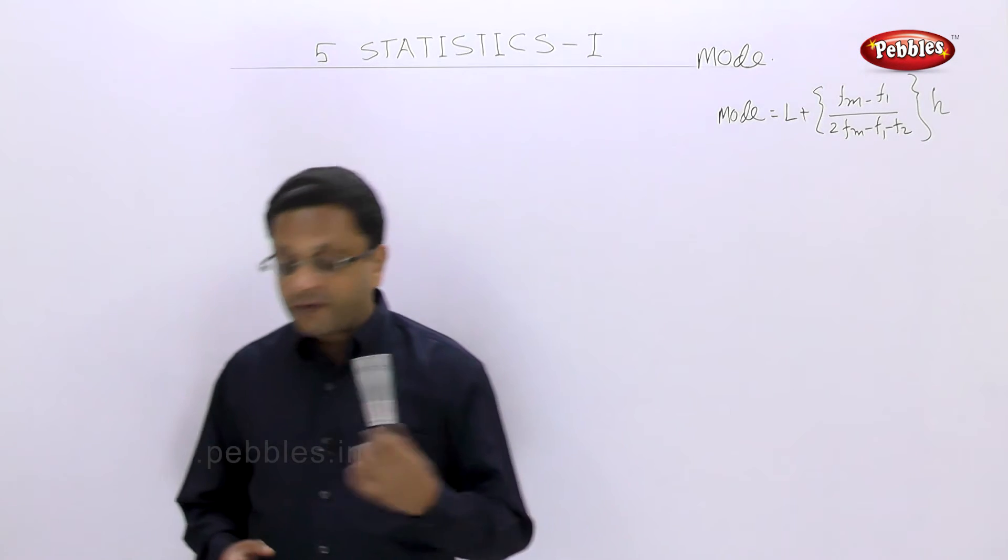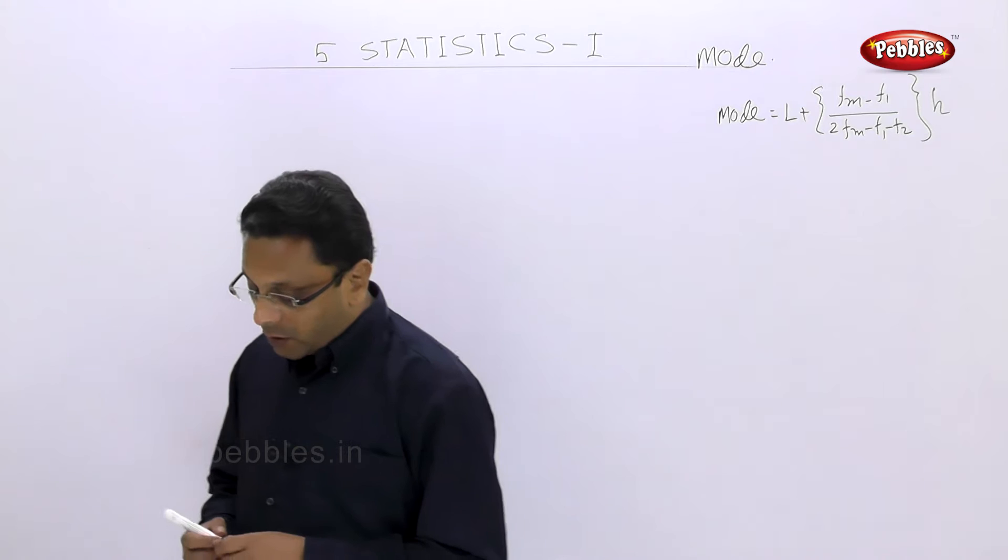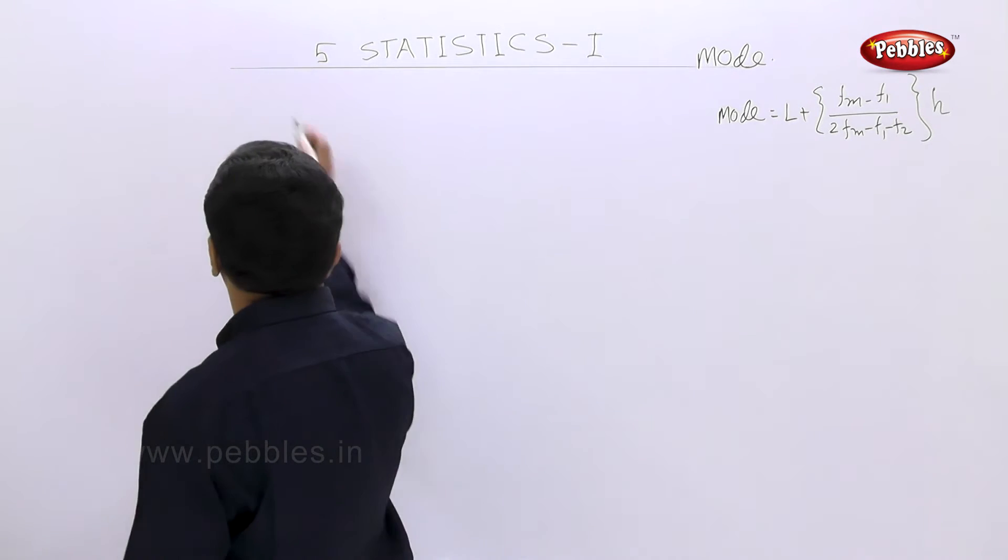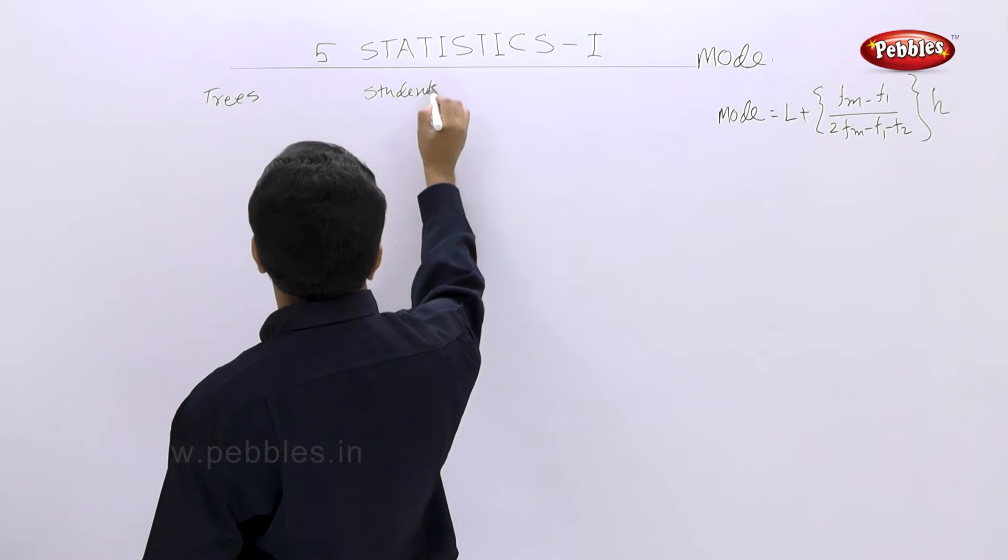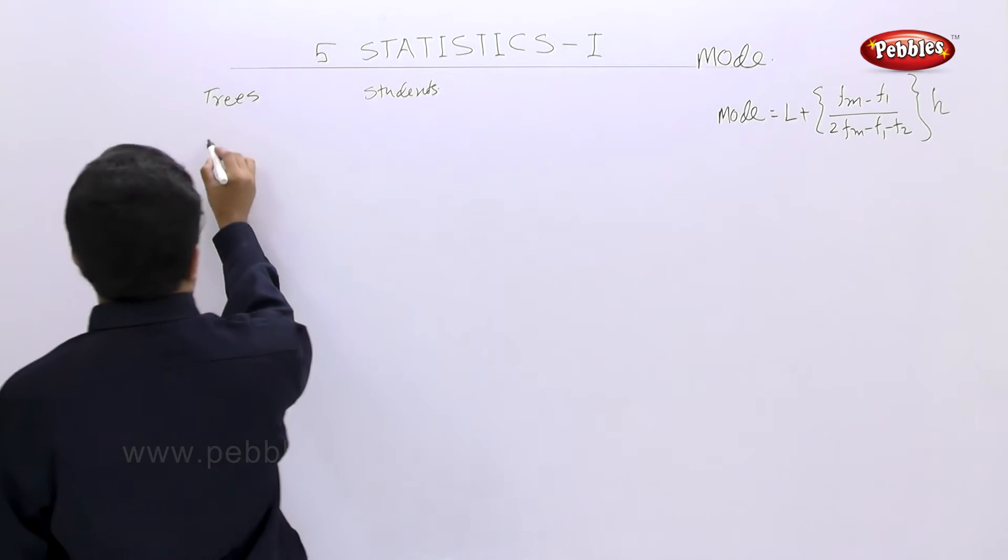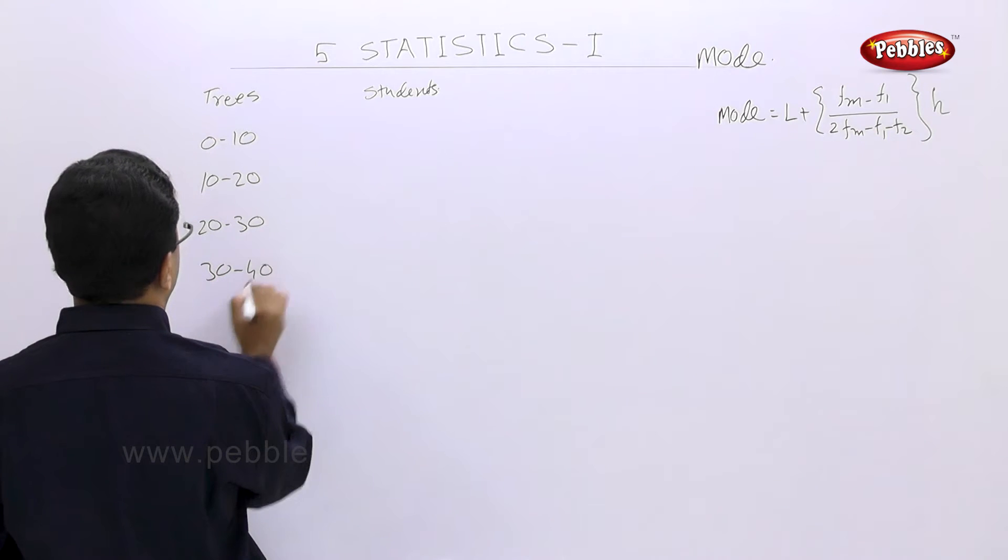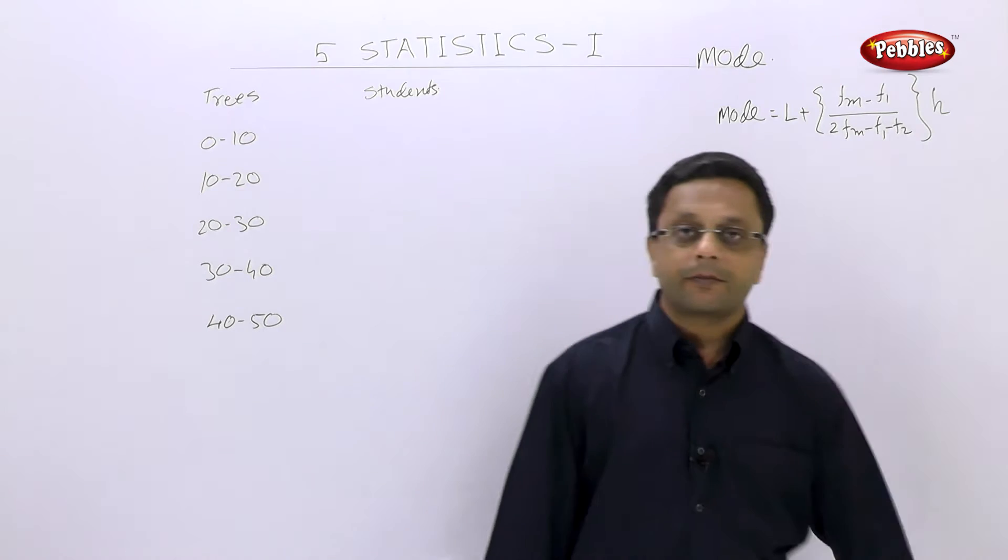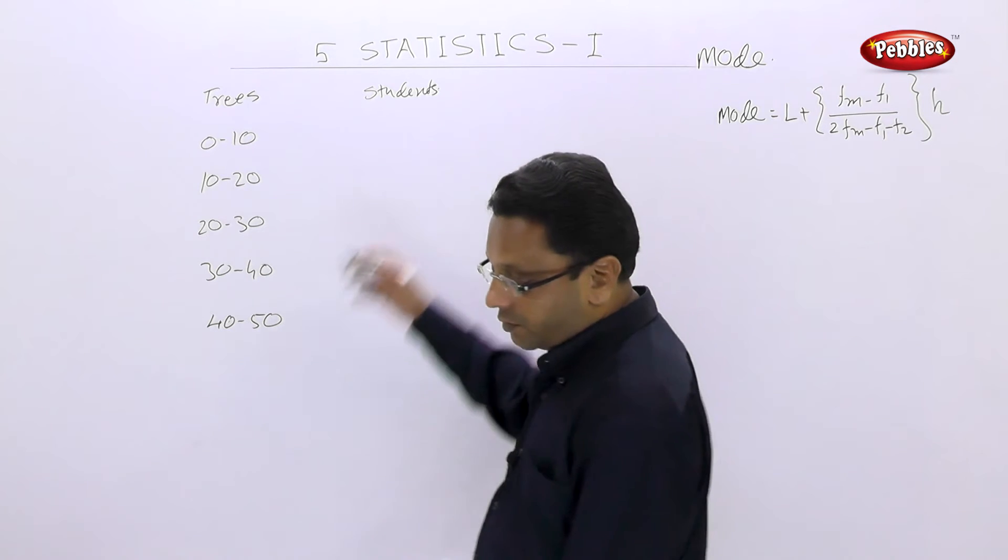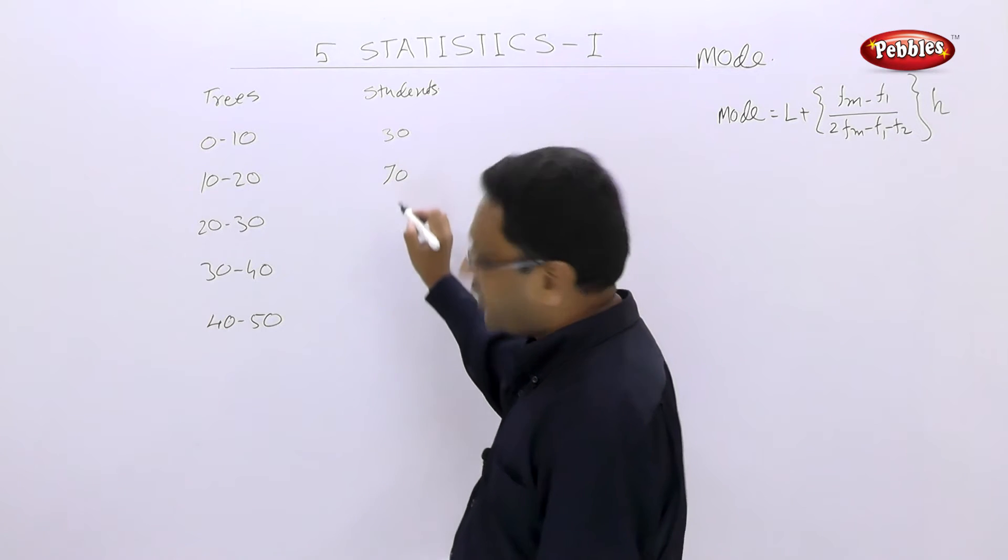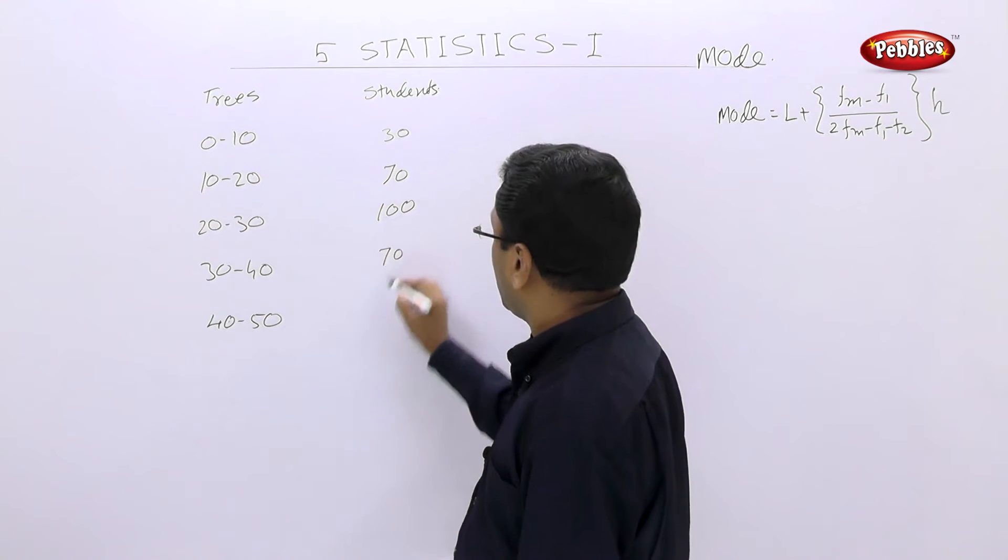Following table shows frequency distribution of number of trees planted by students in the school. Number of trees planted are given and students are given. Number of trees planted are 0 to 10, 10 to 20, 20 to 30, 30 to 40 and 40 to 50. The number of students they are given, 30, 70, 100, 70 and 40.